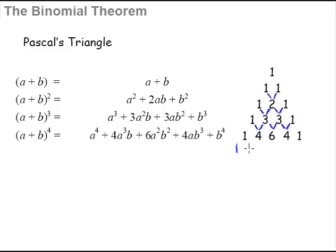1 plus 4, the middle number here, this will be a 5. And of course, this will be a 10. And here, there will be another 10. Here, there will be another 5. And lastly, ends with a 5.